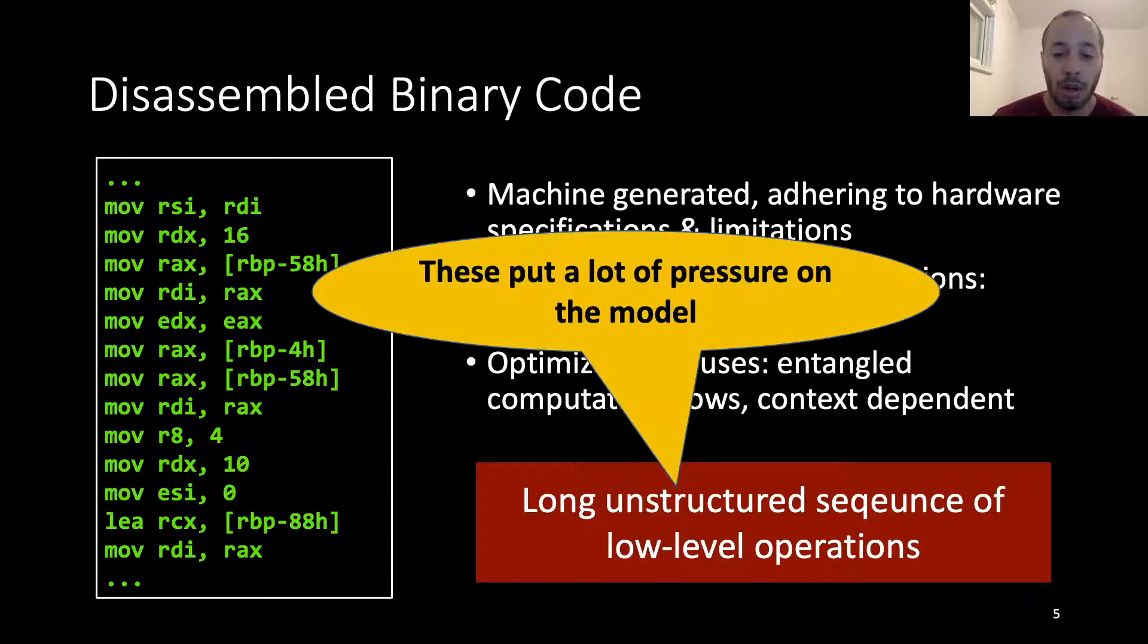These put a lot of pressure on the model, because there is a lot of variation across the different examples, making it difficult to capture reoccurring patterns.